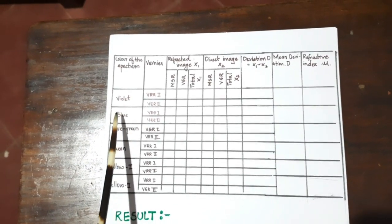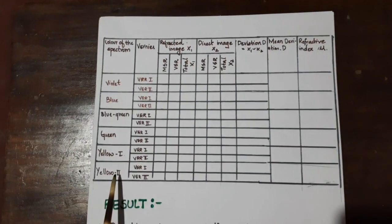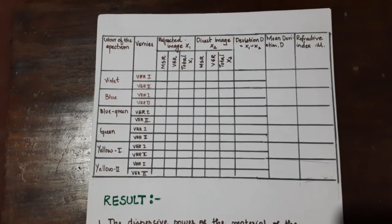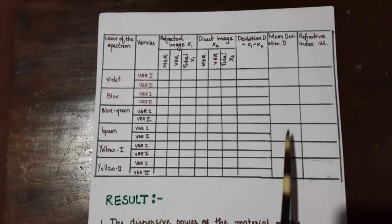Now repeat this for the various other colors, blue, blue green, green, yellow 1 and yellow 2. Every time, you calculate the minimum deviation angle for the various colors.